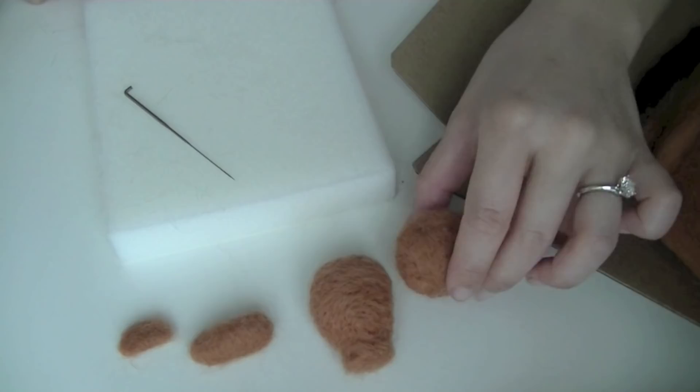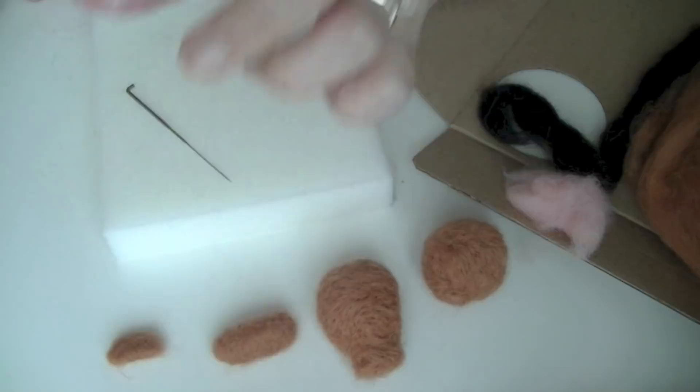For the hind legs, again, you want to make it into the shape of a kidney bean and of course you're going to need two of them.